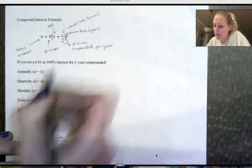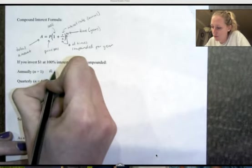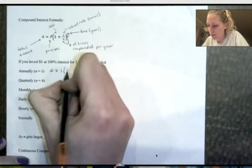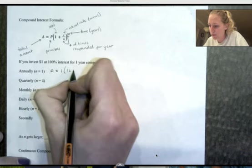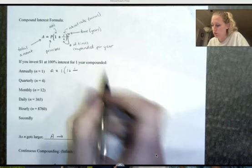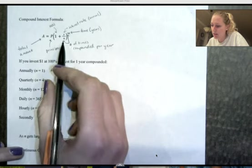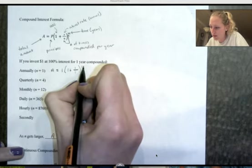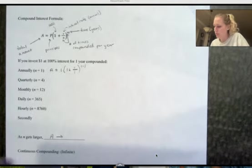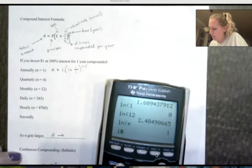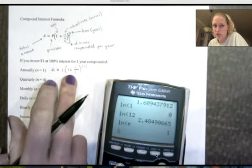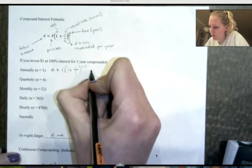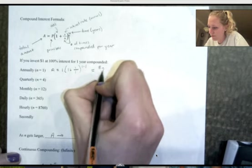We've invested $1 at 100% interest for one year compounded, and we're going to look at these different ones. So I have n equals 1, so my total amount, my principal, my initial amount I invest is $1, and then we have 1 plus my rate, so 100% is 1 as a decimal, and then annually, if I compound annually n is 1, and for 1 year. So I have 1 plus 1 is 2, 2 raised to the first times 1, so this is $2.